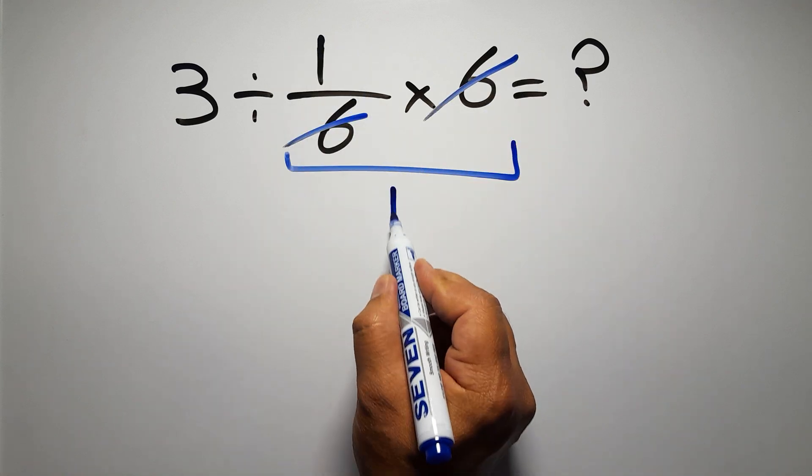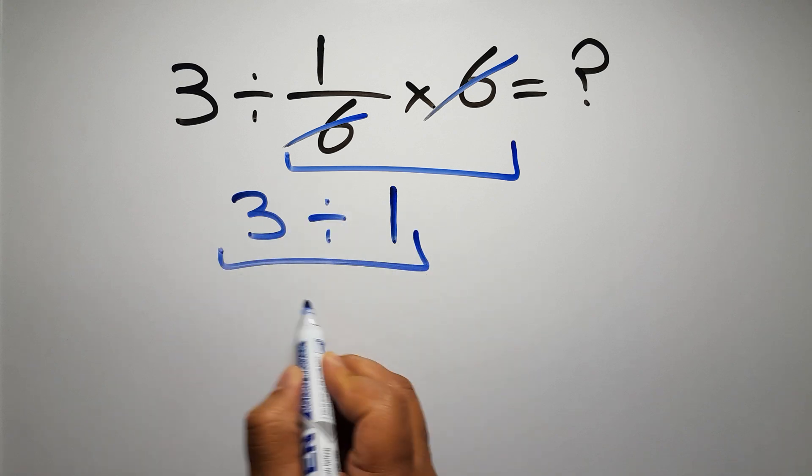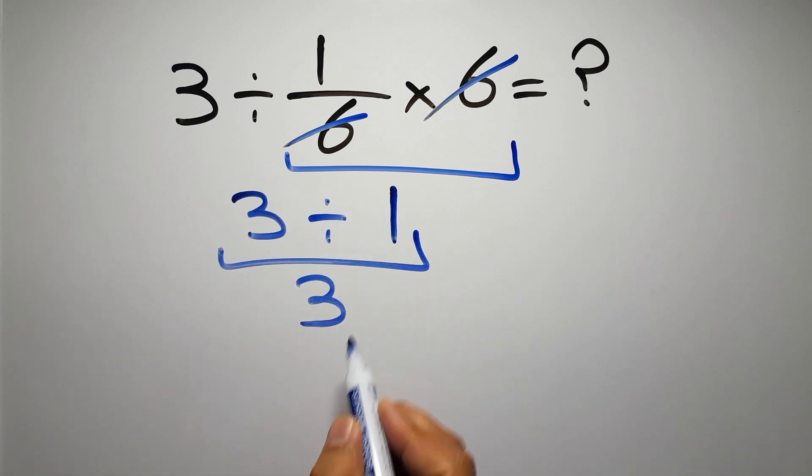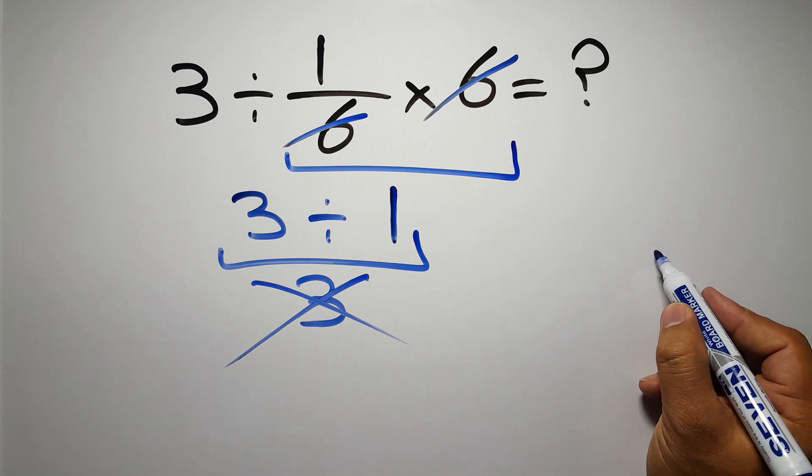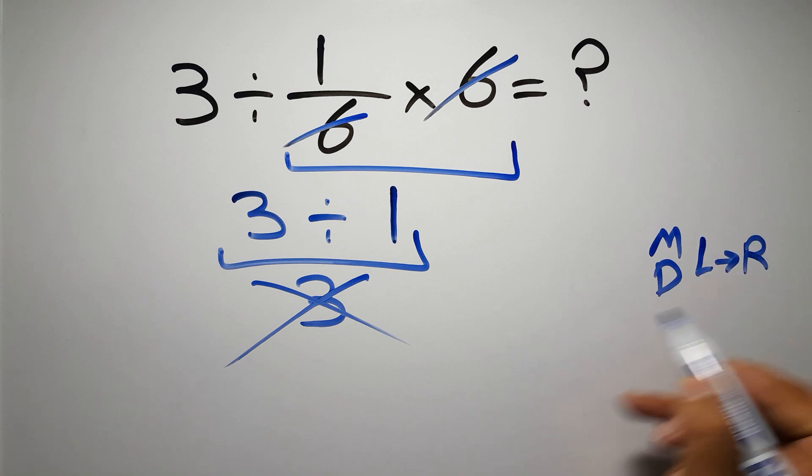We have just one, and three divided by one gives us three. But this answer is not correct because according to the order of operations, multiplication and division have equal priority and we have to work from left to right.